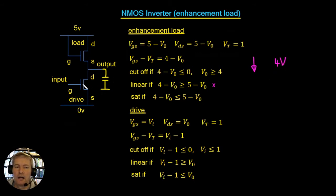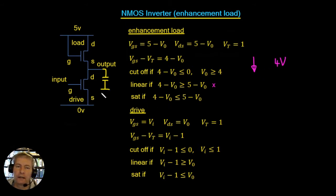So we're halfway to creating an inverter: when the input is low, the output goes high at 4 volts, as opposed to the 5-volt high we get in a CMOS inverter. Now let's look at the drive section and see what happens when the input voltage goes high and what we get for the output low voltage.